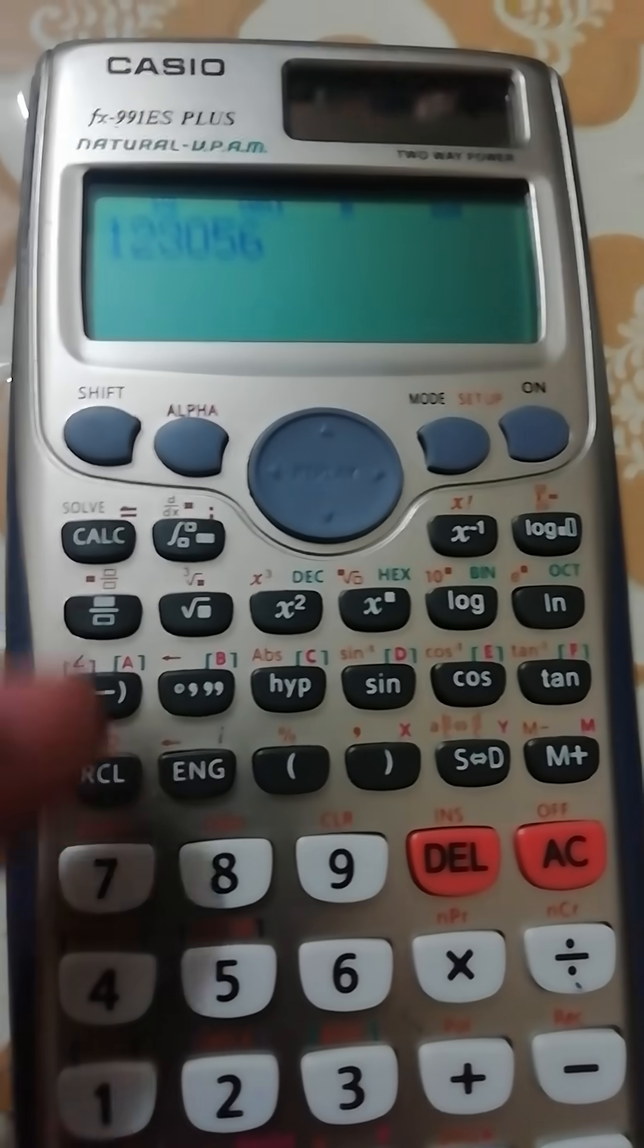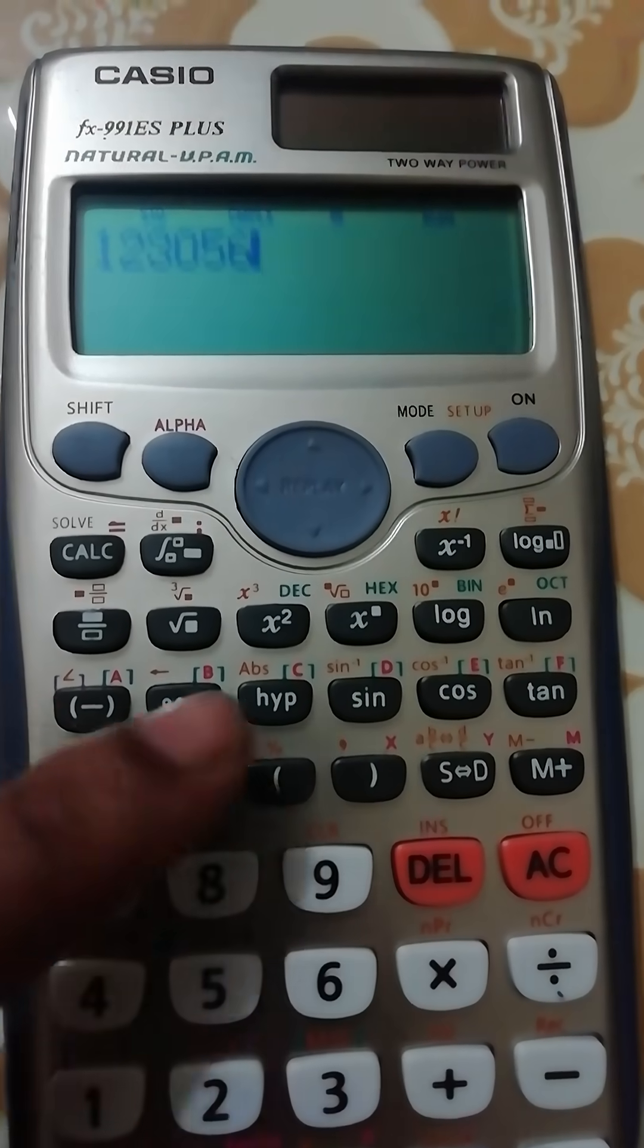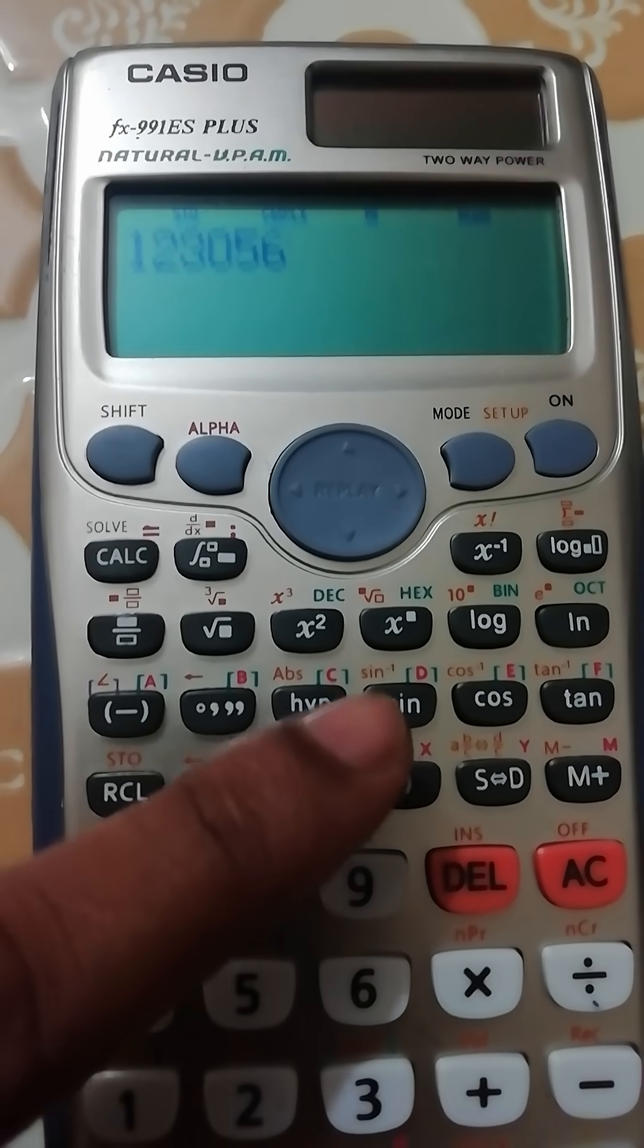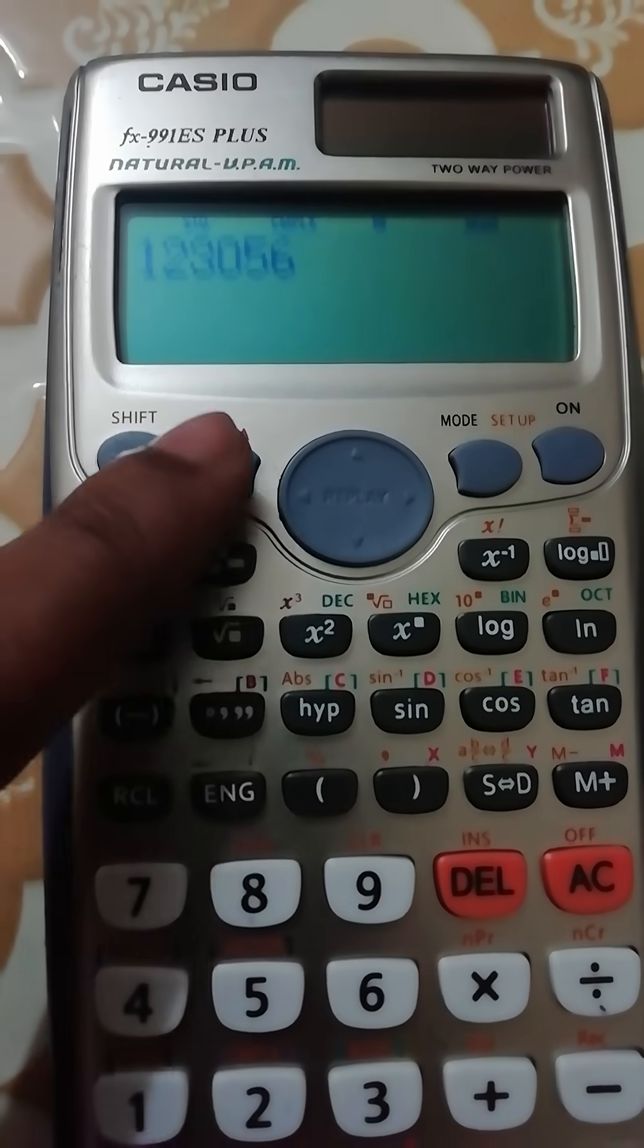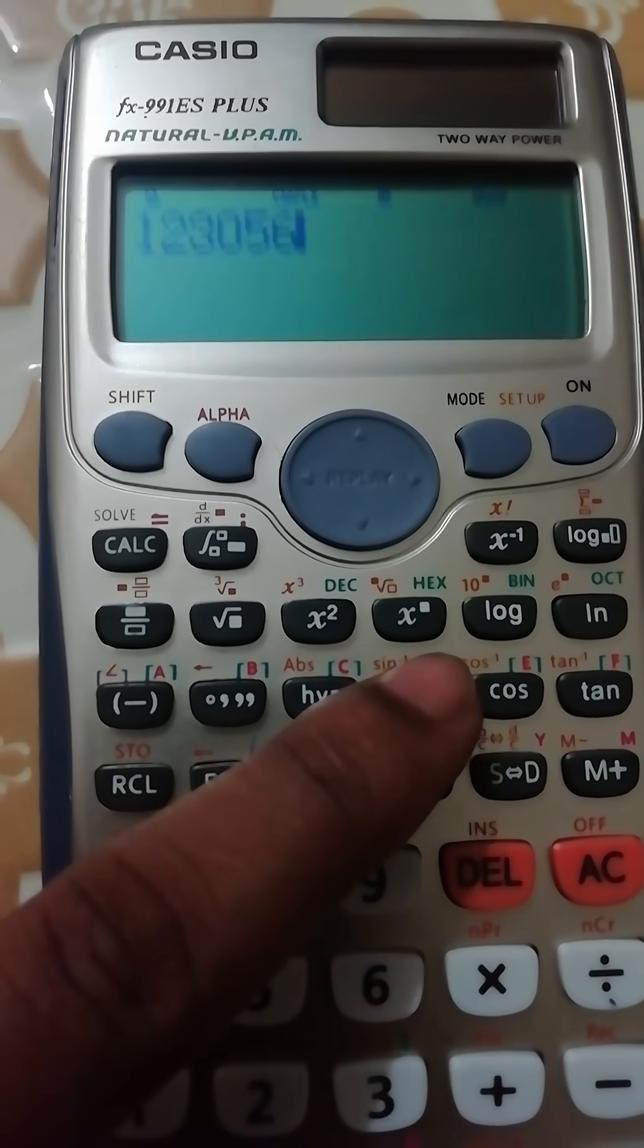After STO, you have to press one of the buttons A, B, C, D, E, or F. You can store in any of these. I want to store it at D, so press ALPHA then D.